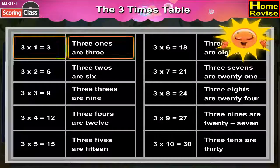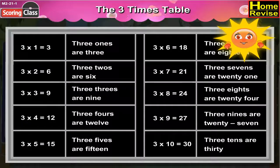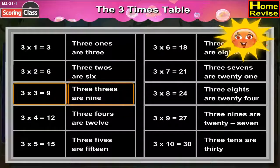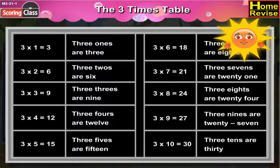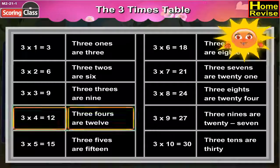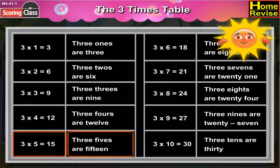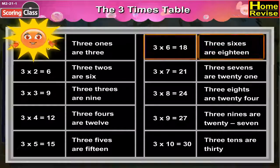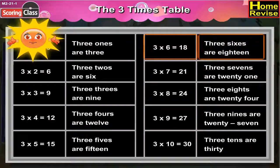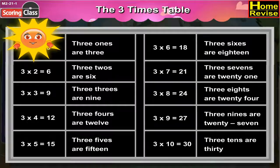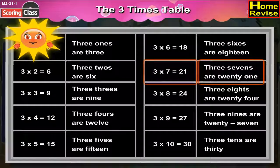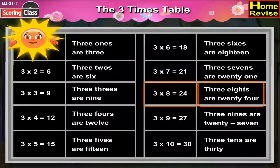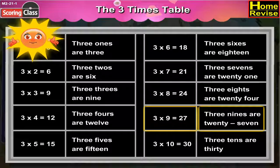Three ones are three. Three twos are six. Three threes are nine. Three fours are twelve. Three fives are fifteen. Three sixes are eighteen. Three sevens are twenty-one. Three eights are twenty-four. Three nines are twenty-seven. Three tens are thirty.